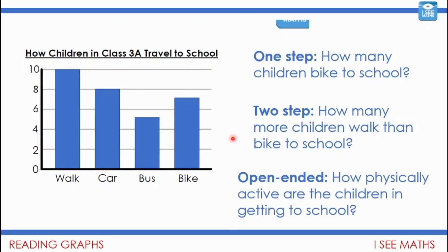A more open-ended question might be: how physically active are the children in getting to school? We might then look at how many children walk or go by bike, in comparison to those that go on other vehicles.